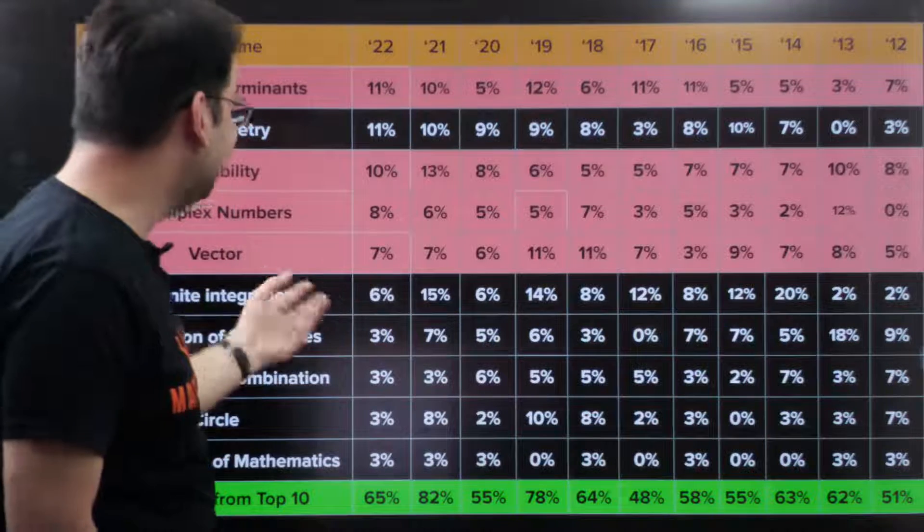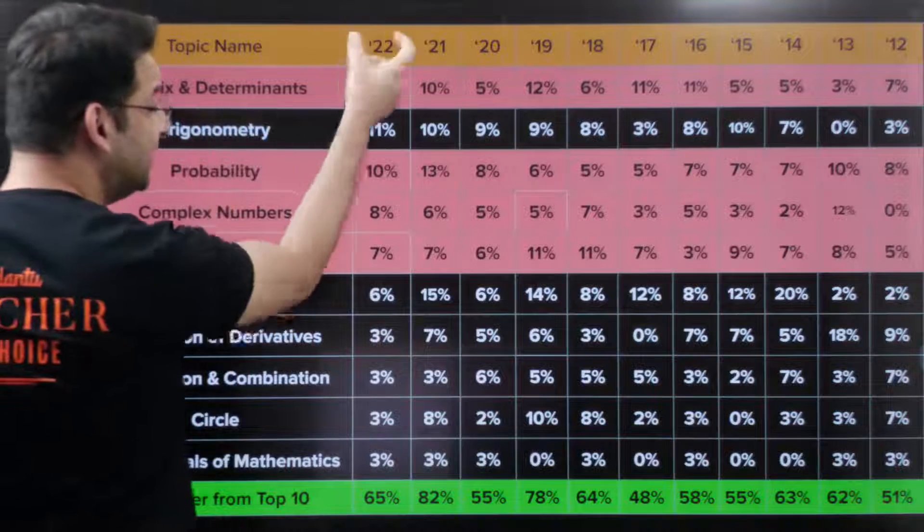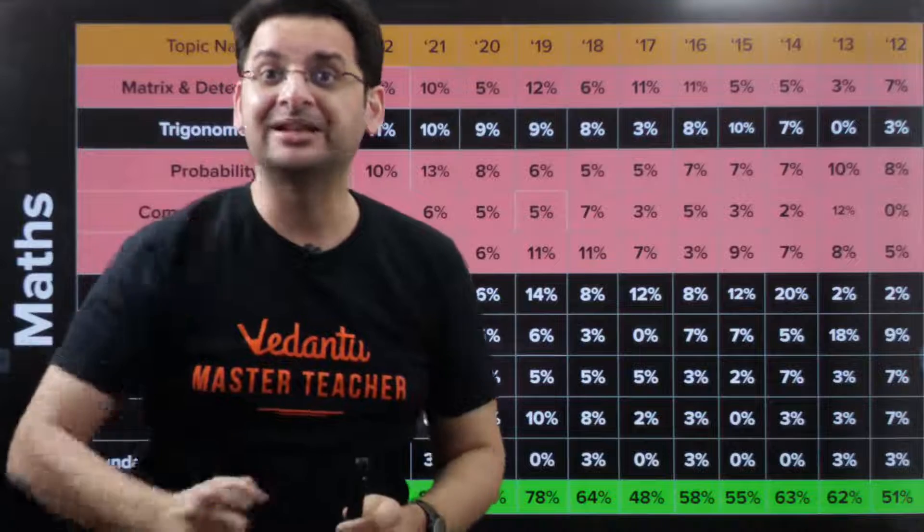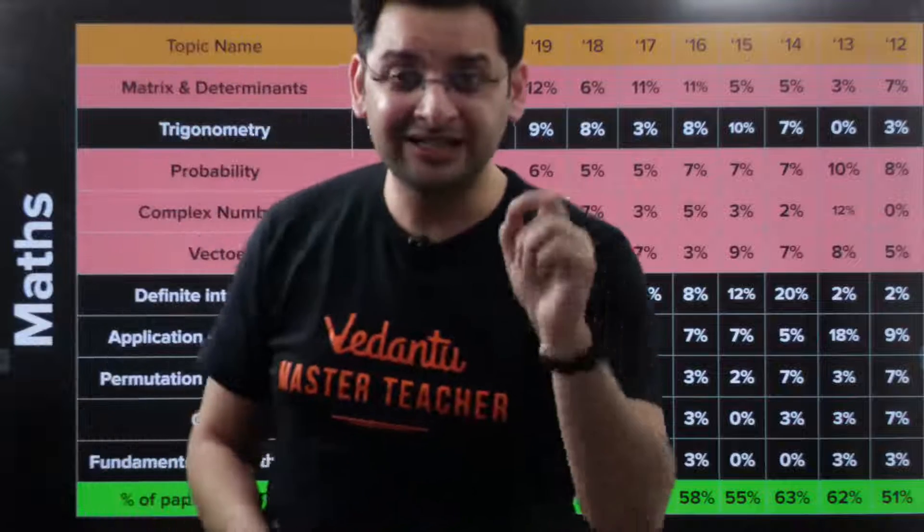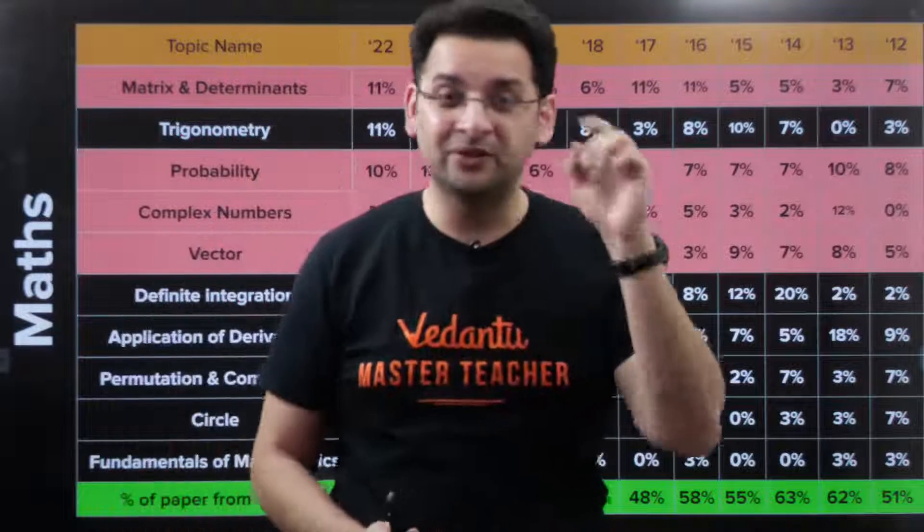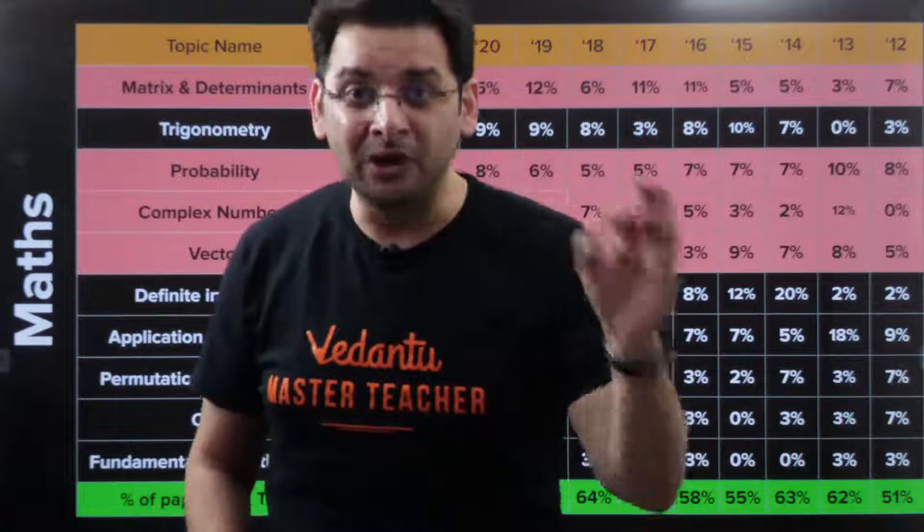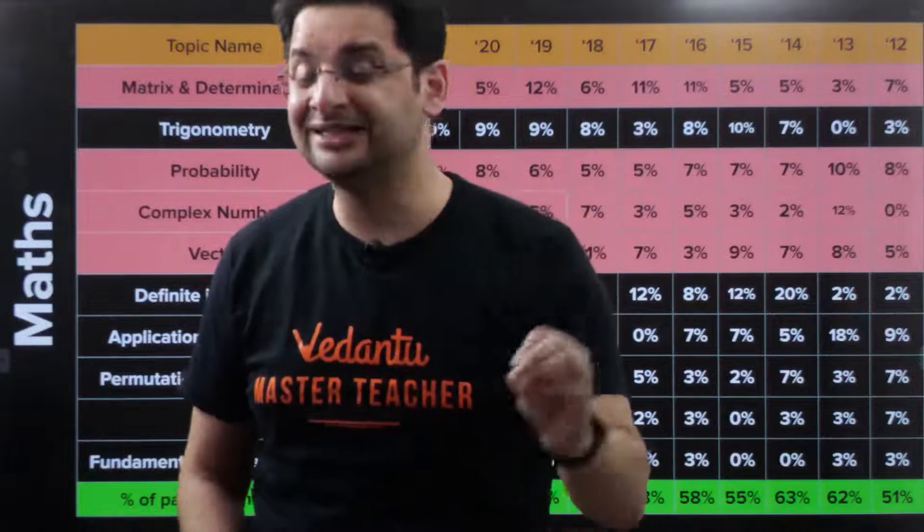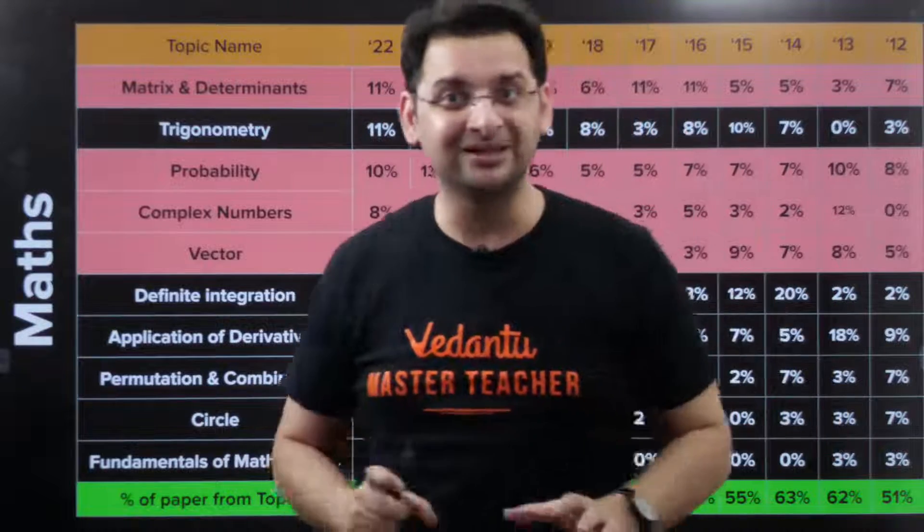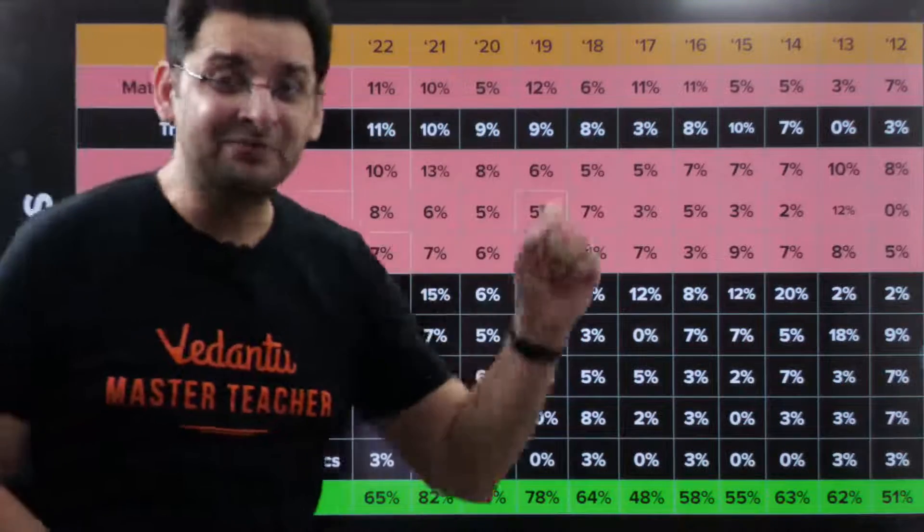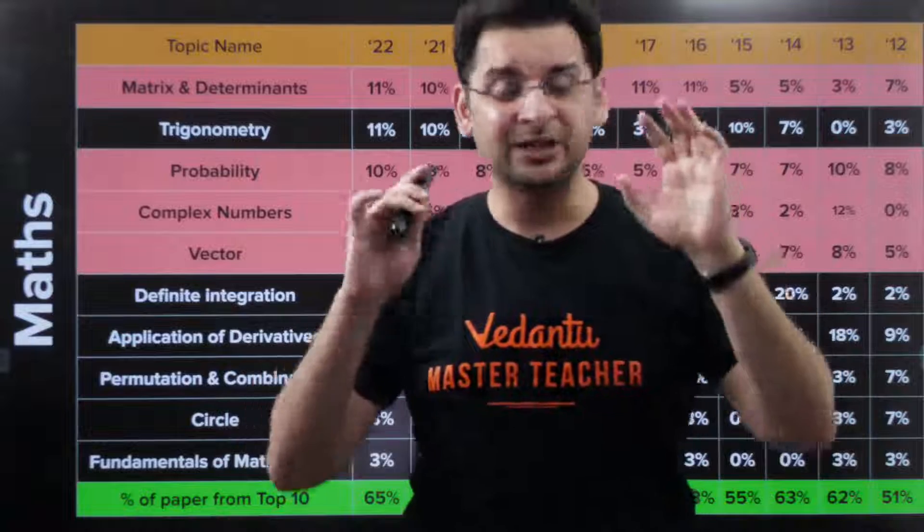You can see the weightage of these chapters in each exam. For example, matrix and determinants in 2022 was 11 percent of mathematics paper. That is huge. I discussed this in the lecture yesterday. If you're able to score around 25 to 35 percent marks, you could get a seat in IIT. 35 to 45 percent marks, you could get a decent seat in a good IIT. And around 50 percent marks, top IITs, top branches.